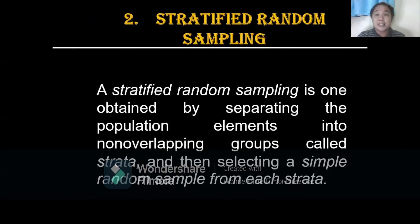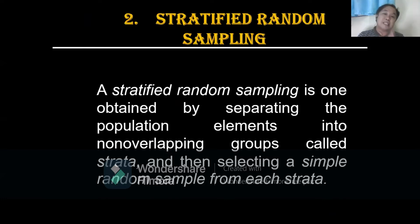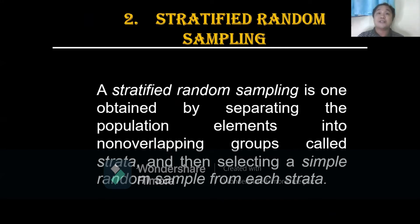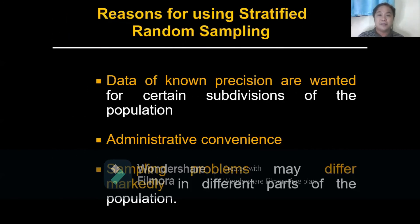The second probability sampling design is stratified random sampling, which is obtained by separating the population elements into non-overlapping groups called strata and then selecting a simple random sample from each stratum.